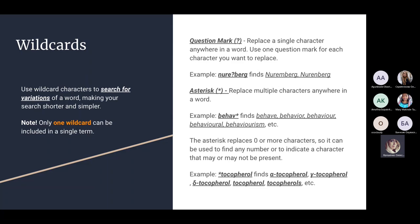The asterisk replaces multiple characters anywhere in the word. For example, 'behave*' finds 'behave,' 'behavior,' 'behaviour,' 'behavioral,' 'behaviorism,' and other variations — including both English and American spellings. The asterisk replaces zero or more characters and can indicate a character that may or may not be present. You can also place the asterisk before a word — for example, '*tocopherol' finds alpha-tocopherol, gamma-tocopherol, beta-tocopherol, tocopherol itself, and its plural form.